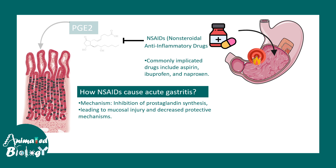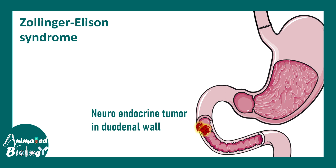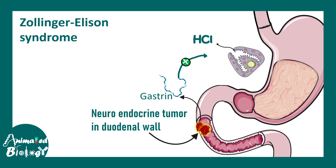The third cause is Zollinger-Ellison syndrome, a very rare endocrine syndrome where a neuroendocrine tumor occurs in the duodenal wall. This neuroendocrine tumor secretes a large amount of gastrin. Gastrin stimulates the parietal cells of the stomach to secrete HCl, increasing acidity. Some of this acid also travels to the duodenum, creating more acidity in the duodenal region and eroding the mucosa, leading to duodenal ulcers.